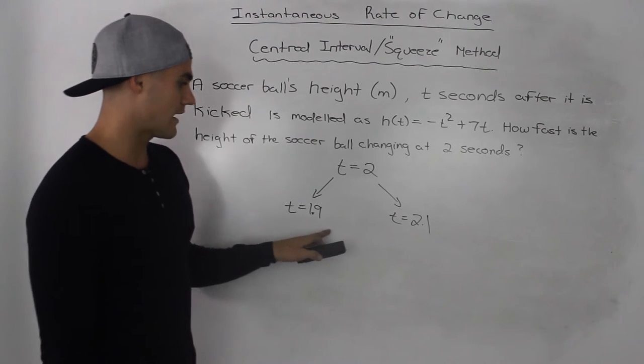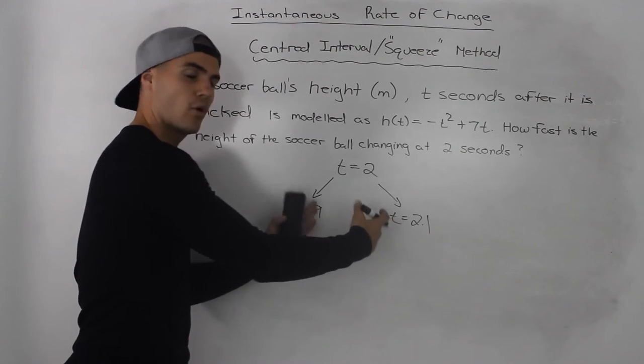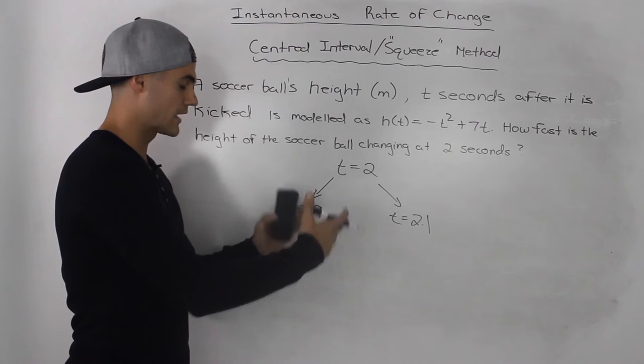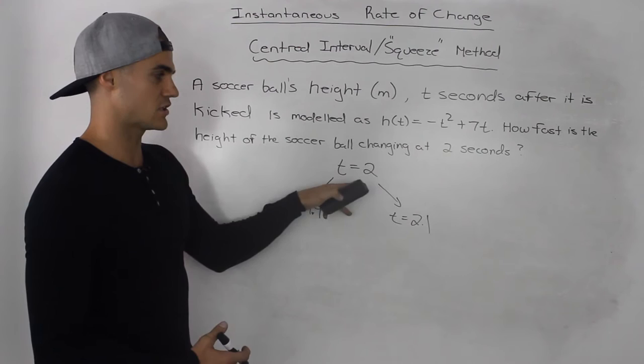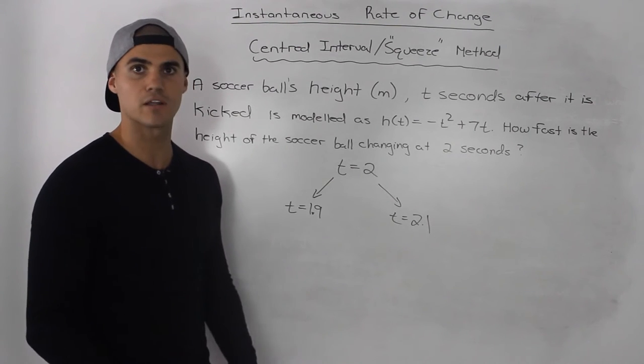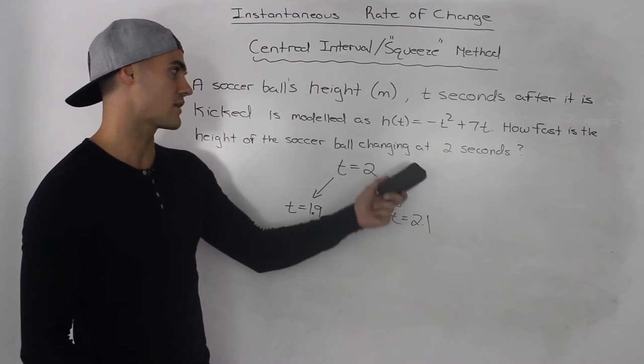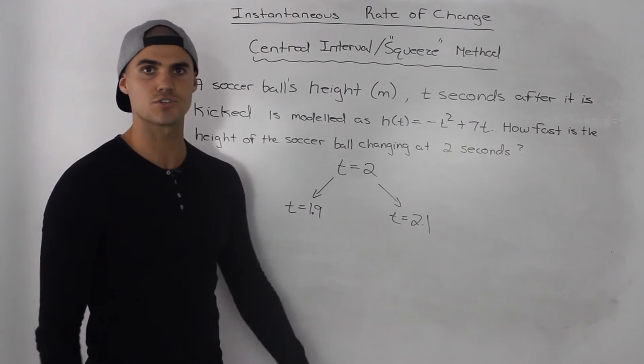Now what we do is we find that average rate of change between these two points that are close to 2. And that slope of that line would approximate the slope of the tangent line at t = 2. So that would give us a good approximation for the instantaneous rate of change at 2 seconds.